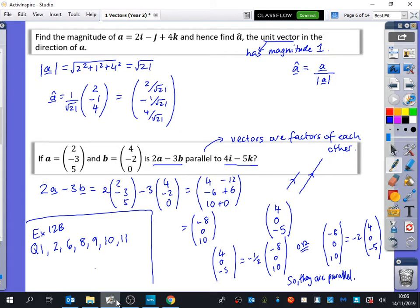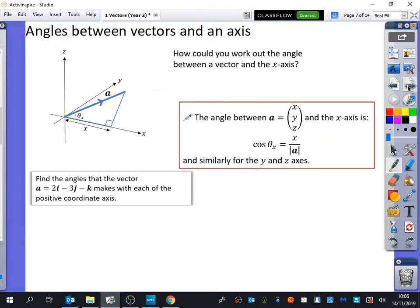The last part of this first half of the topic is we're going to look at angles between vectors and an axis. So again, we've got a 3D representation of a particular vector. I haven't given you any information about that vector, other than the fact I've called it A. And you can see that this is the x-axis, we've got the y-axis, which is the bit that looks like it's going back into the board, and z is going straight up here.